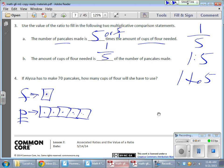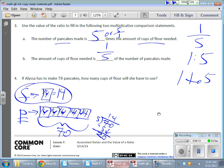Now, problem 4 says, if Alyssa has to make 70 pancakes, how many cups of flour will she have to use? Well, if I took that 70 and I divided it by the amount of boxes I have, which is 5, 5 goes into 7 once, I subtract, I get 2, I bring down the zero, that goes 4 times, means the value of each of these cells is 14. So flour, I would need 14 cups of flour to make 70 pancakes.